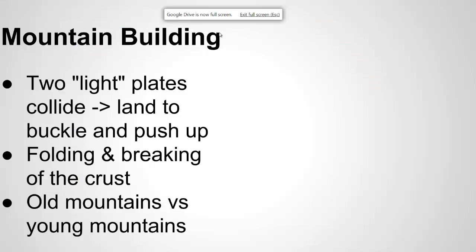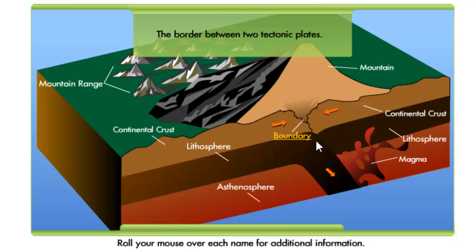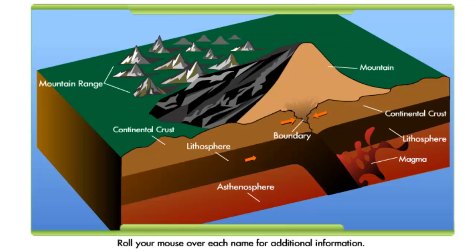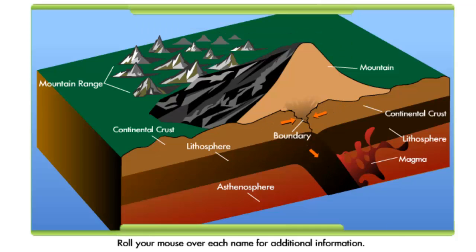Mountain building. Mountains form when two light continental plates collide, causing the land to buckle or be pushed up. This results in folding or breaking of the crust. We can tell old mountains from young mountains — old mountains are more rounded from erosion and weathering, while younger mountains are more jagged because rain, water, wind, and ice has not broken them down yet.